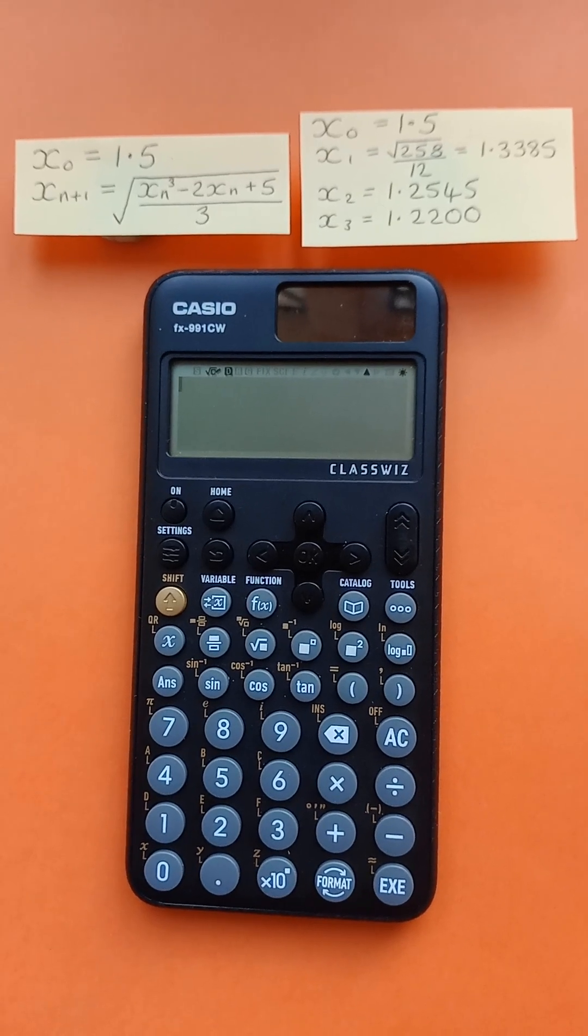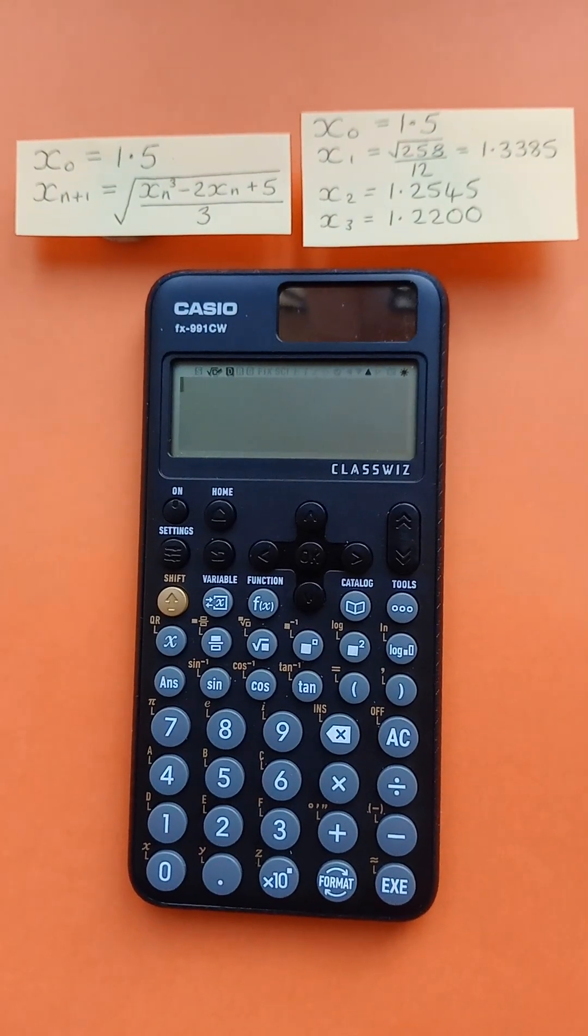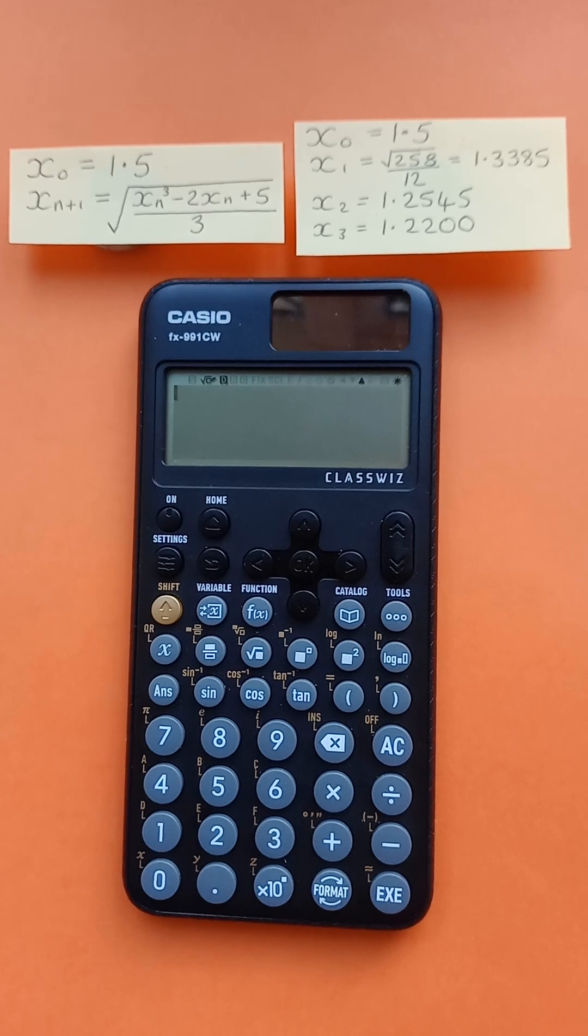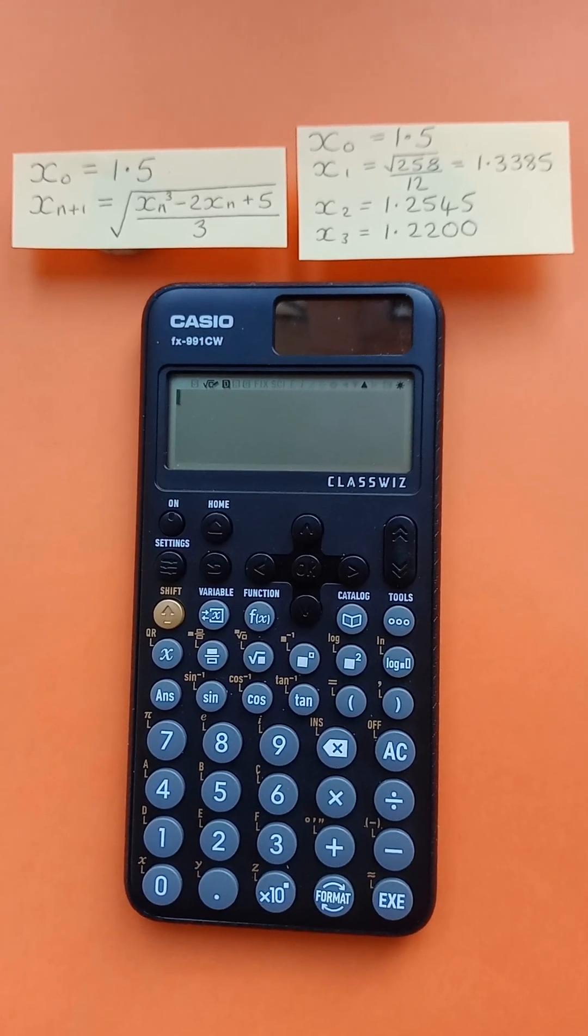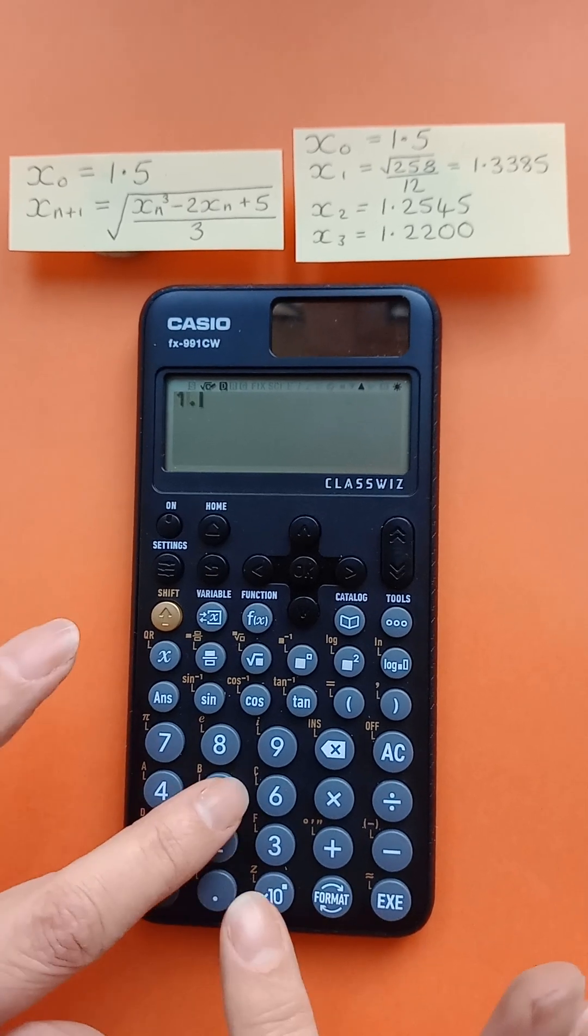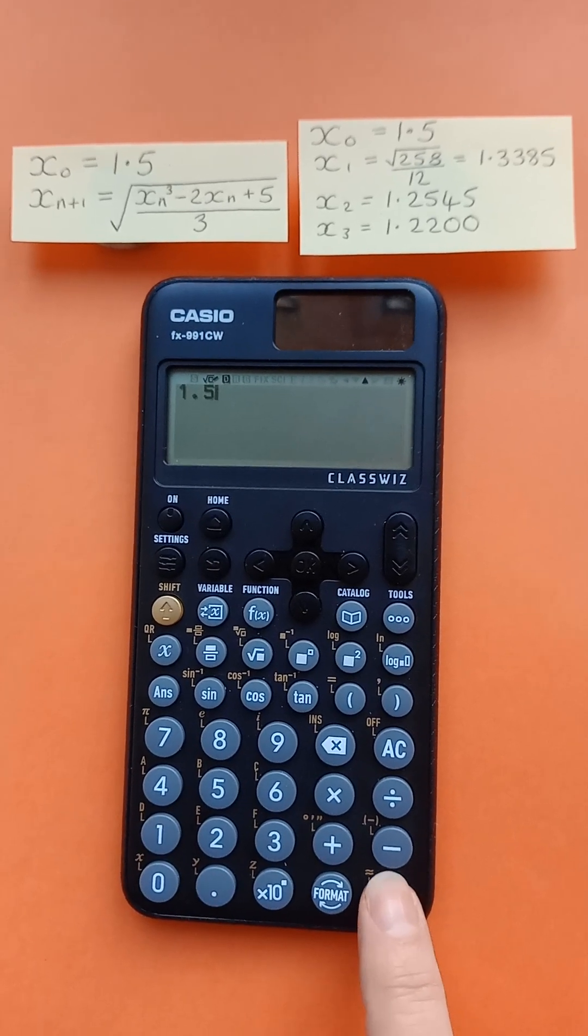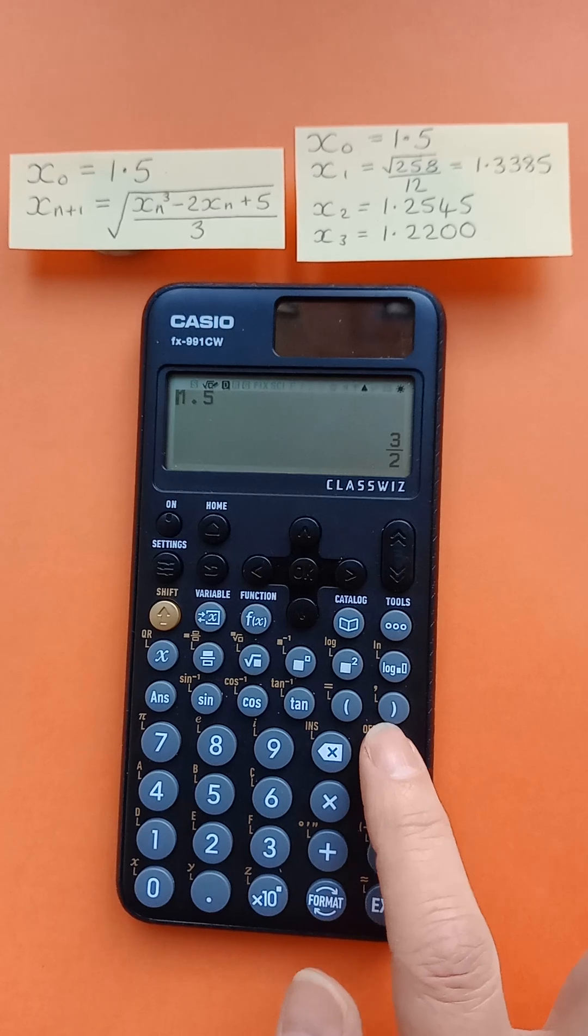Here's how to calculate the answer to iteration questions using this calculator. First, enter the value for x0 by inputting 1.5, press execute to store it, and then clear it.